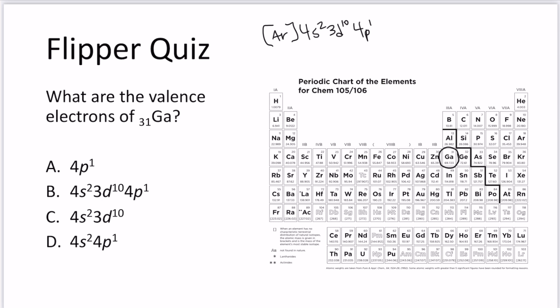But we have to remember that valence electrons are only those electrons that are in the highest principal quantum number, so these d10 electrons do not count as valence electrons. So 4s2 4p1 is going to be the correct answer for our valence electrons for gallium.